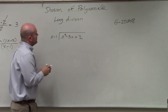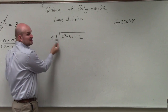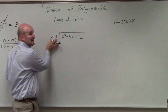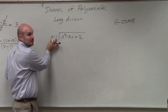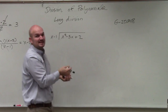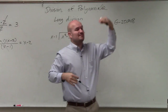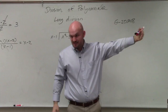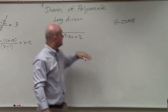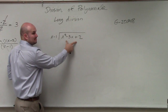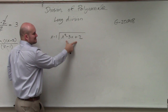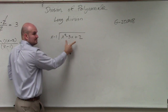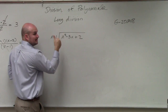So here's our divisor — we've got to make sure this is in descending order. What I mean by descending order is you have the highest power first, then going down in descending form. And then our dividend is in descending power. So we're good here.